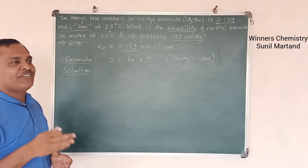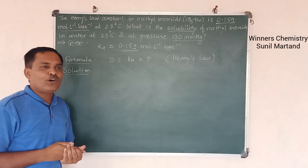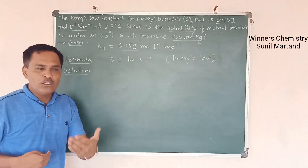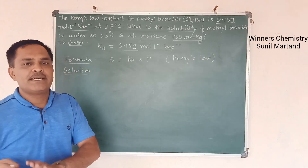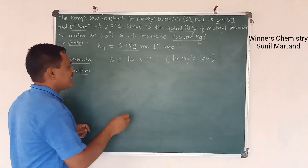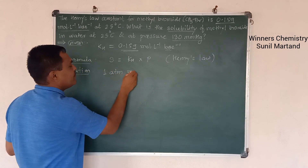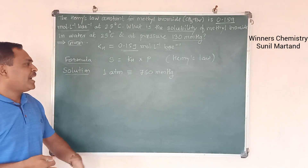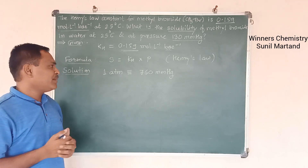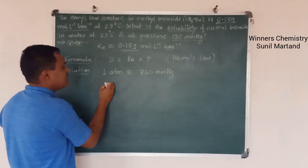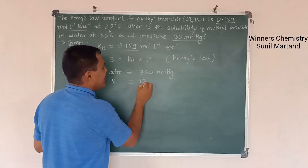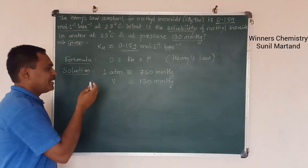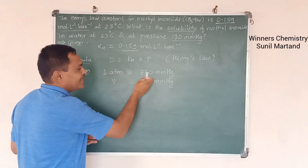To convert mmHg into bar, we use the standard relation: at one atmospheric pressure, the value is 760 mmHg. So first we convert 130 mmHg into atmosphere, and then that atmosphere is converted into bar. The standard relation is: 1 atmospheric pressure equals 760 mmHg. By cross multiplication, we get the pressure in ATM.